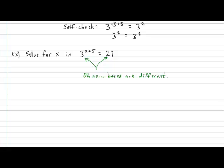In this case, if you have good knowledge of your bases, you'll find that instead of writing 27, you can convert 27 into 3 exponent 3. And suddenly we have the same bases on the left and right side of the equal sign. Once your bases are identical, all you really need to worry about is making sure the exponents are identical, meaning that x plus 5 should equal the exponent on the right side, 3. And in this case, it gives us an x value of negative 2.